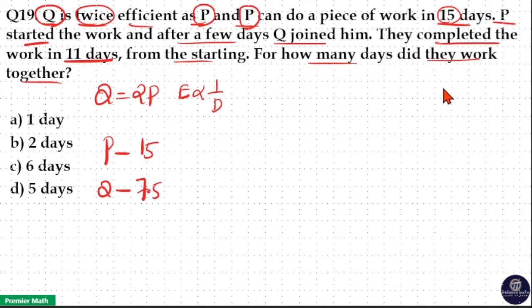If you take the efficiency ratio of P and Q, if P's efficiency is 1 unit then Q's efficiency is twice the efficiency of P. Then days ratio will be inversely proportional to efficiency ratio, that is 2 is to 1. If P takes 15 days to complete a work, then Q only takes 7.5 days to complete the same work.